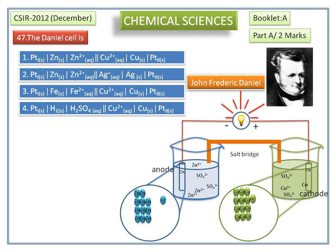Similarly, the second zinc atom is oxidized into Zn²⁺ and 2 electrons. These also move from anode to cathode, and the reduction of Cu²⁺ ions takes place at the cathode.